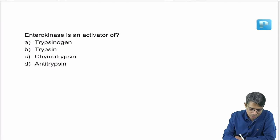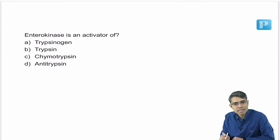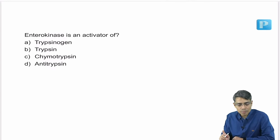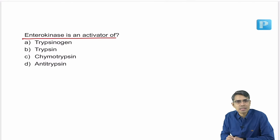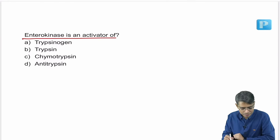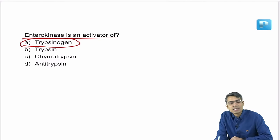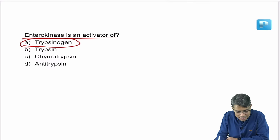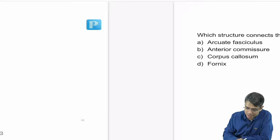Next: enterokinase is an activator of — we already discussed this. Enterokinase is present at the level of the duodenum and converts trypsinogen to trypsin. Trypsinogen is inactive and is activated to trypsin.